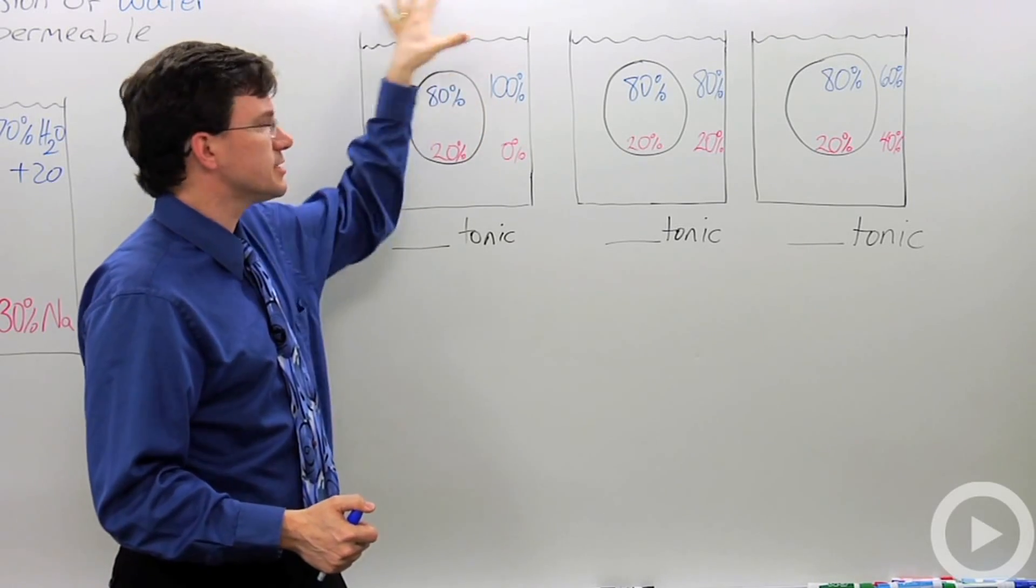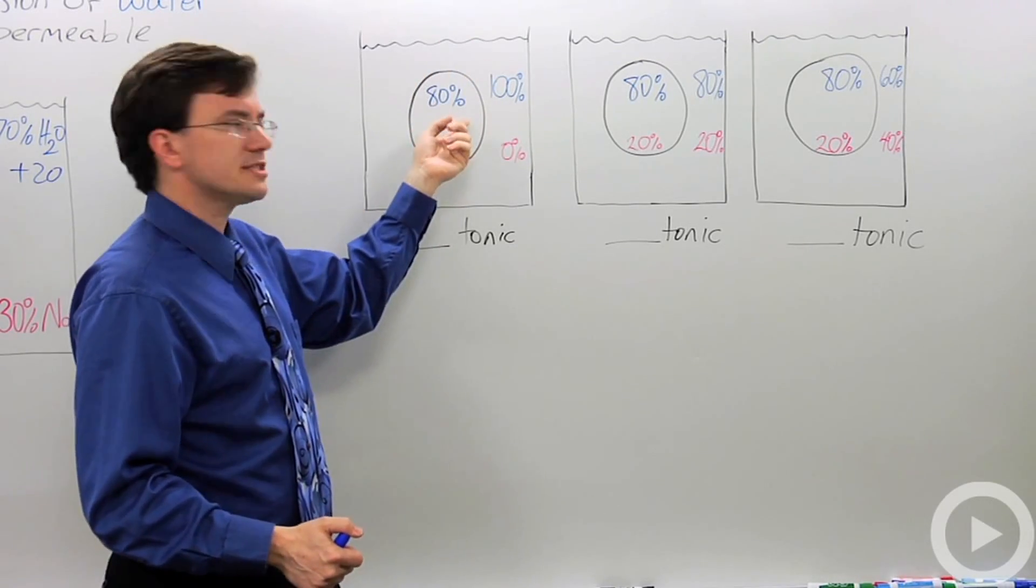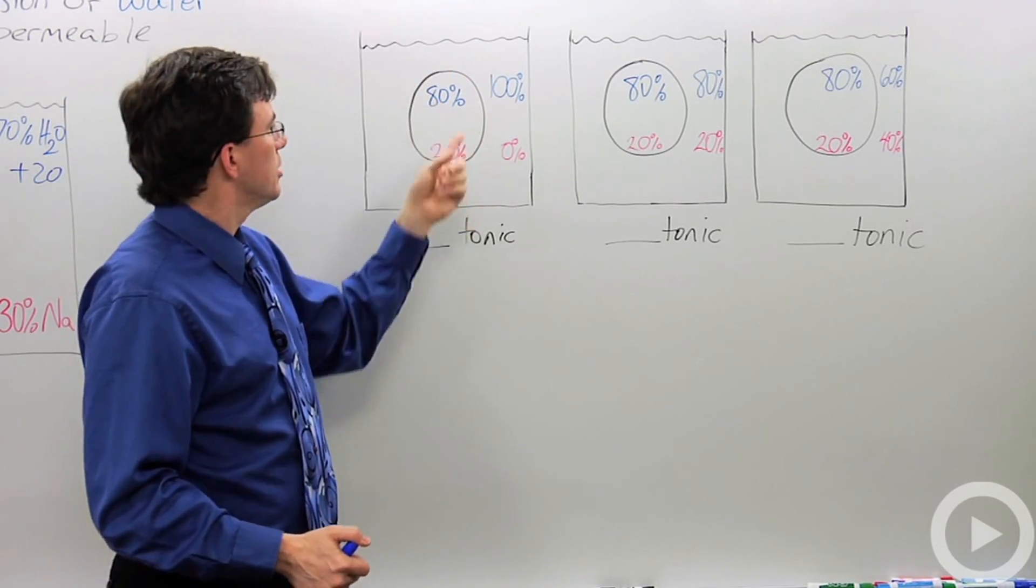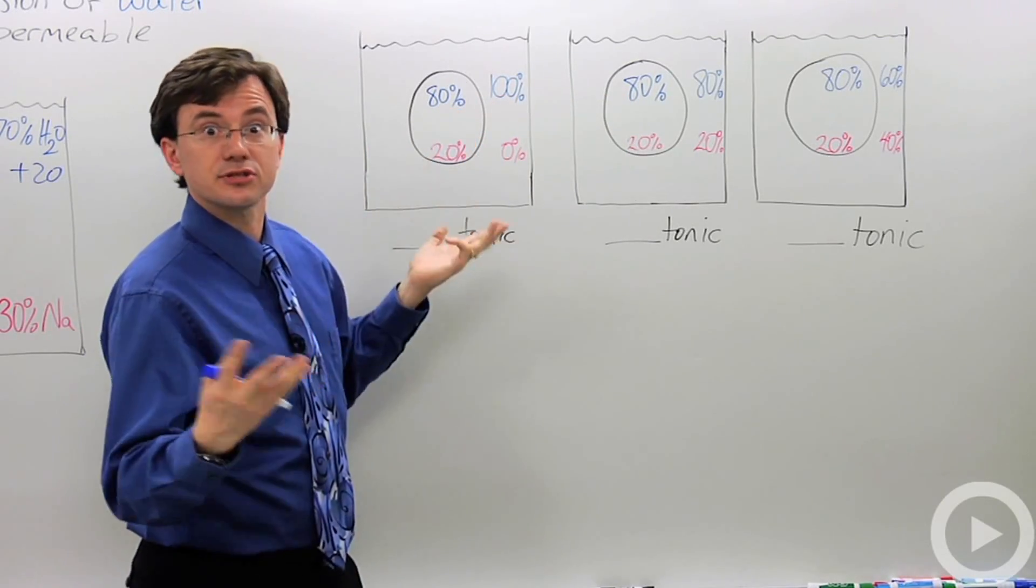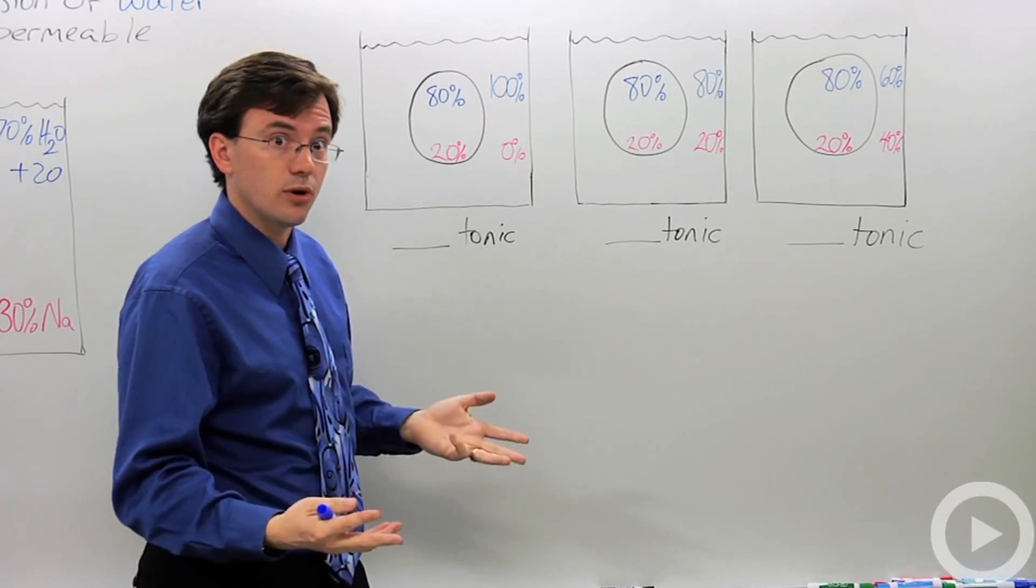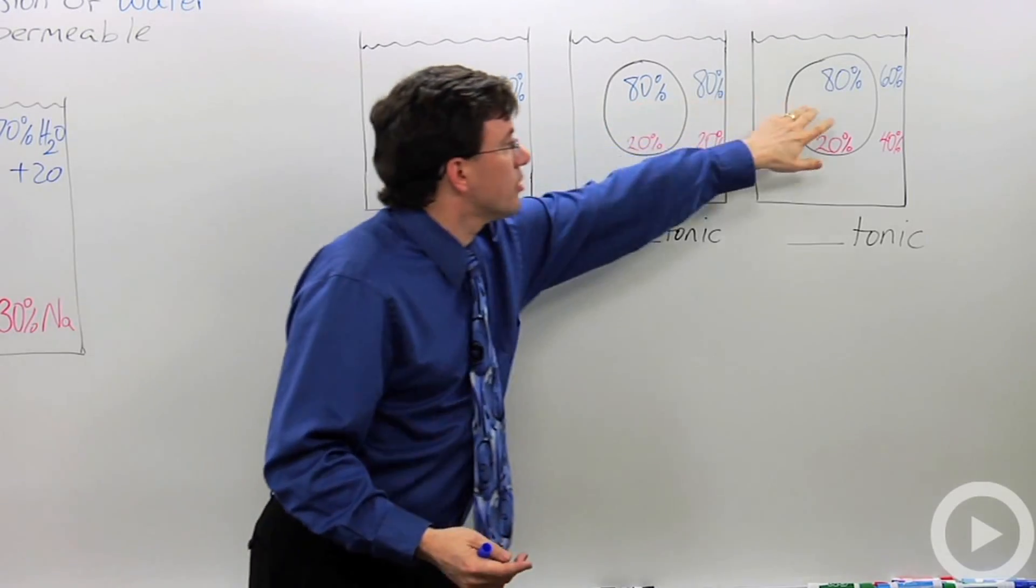But what I'm going to do is I've drawn here three different circumstances. This little black circle here that's in my beaker of water. Let's say that's a red blood cell, right? All of these red blood cells have 80% water, 20% other stuff. I don't care what it is. It's just not water. So they're all the same.